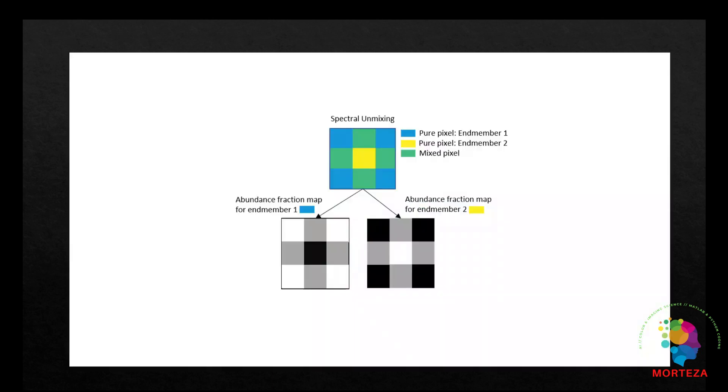In hyperspectral imagery, an endmember refers to pure spectral signatures representing the materials or substances present within the scene. These endmembers are essentially the building blocks of hyperspectral data and can represent various materials such as vegetation, water, soil, buildings, or other objects of interest. The process of identifying and extracting these endmembers from hyperspectral data is known as endmember extraction or spectral unmixing.